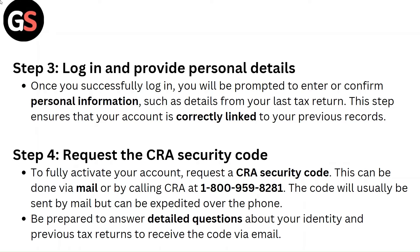This step ensures that your account is correctly linked to your previous records. Step 4: Request the CRA security code. To fully activate your account, request a CRA security code. This can be done via mail or by calling CRA at 1-800-959-8281.